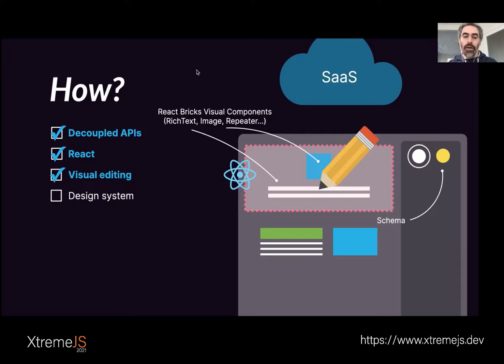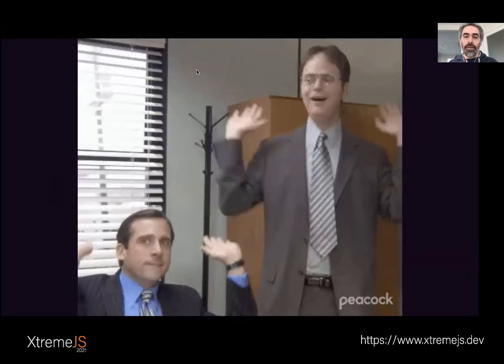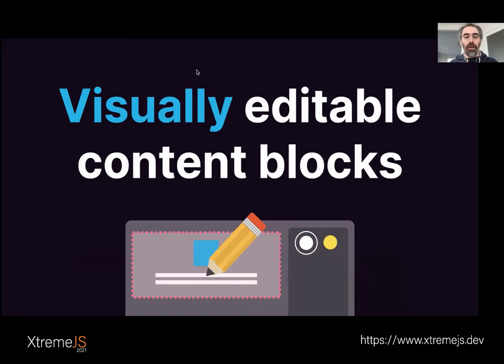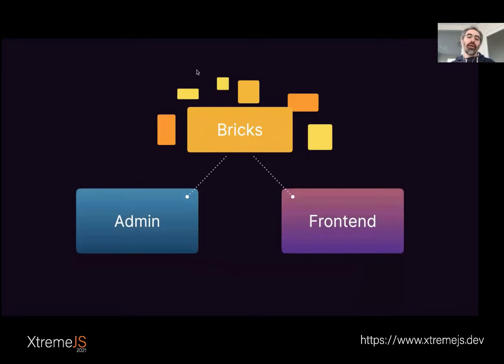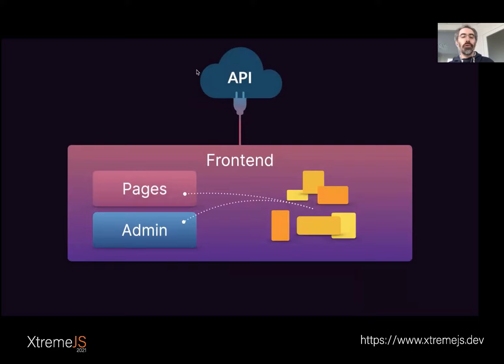So both Kate and John are happy. We have this concept of visually editable content blocks — we call them Bricks. Bricks must be shared between the admin and the front-end, because what you see in the admin is what you get on the front-end. The trick is to put the admin interface inside the front-end project. In your Next.js project, you have a slash admin folder where the admin lives, and both the pages and the admin interface import the same Bricks.